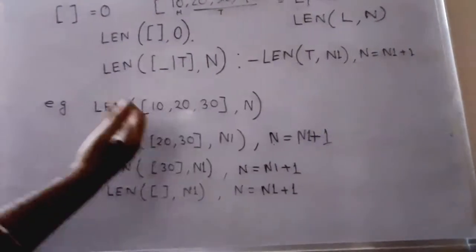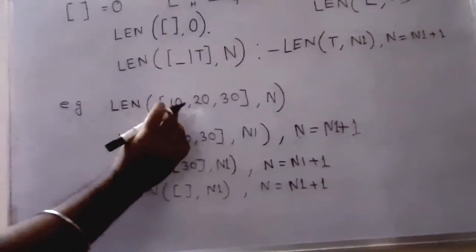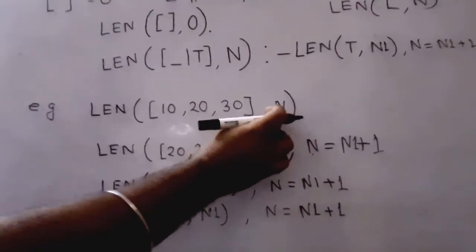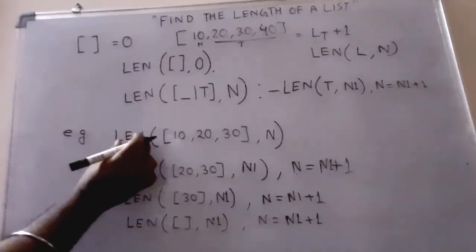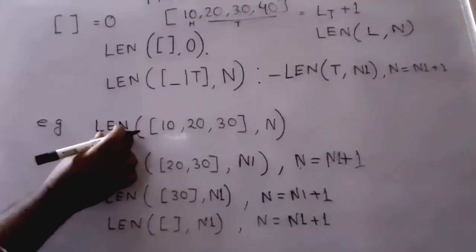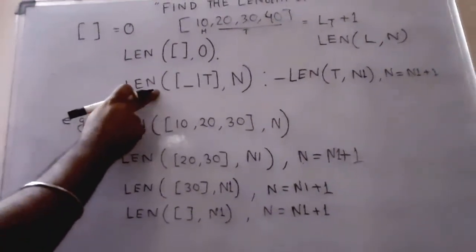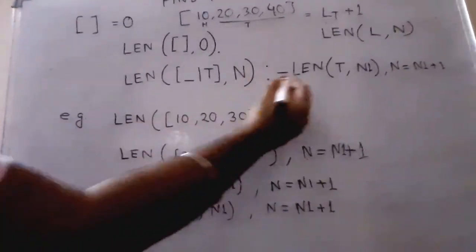Let's see how it will execute. Suppose we have [10,20,30]; the length of the list will come in N. So it will look for the len clause in the clause section. It matches with the second clause. Now it will look for the tail.